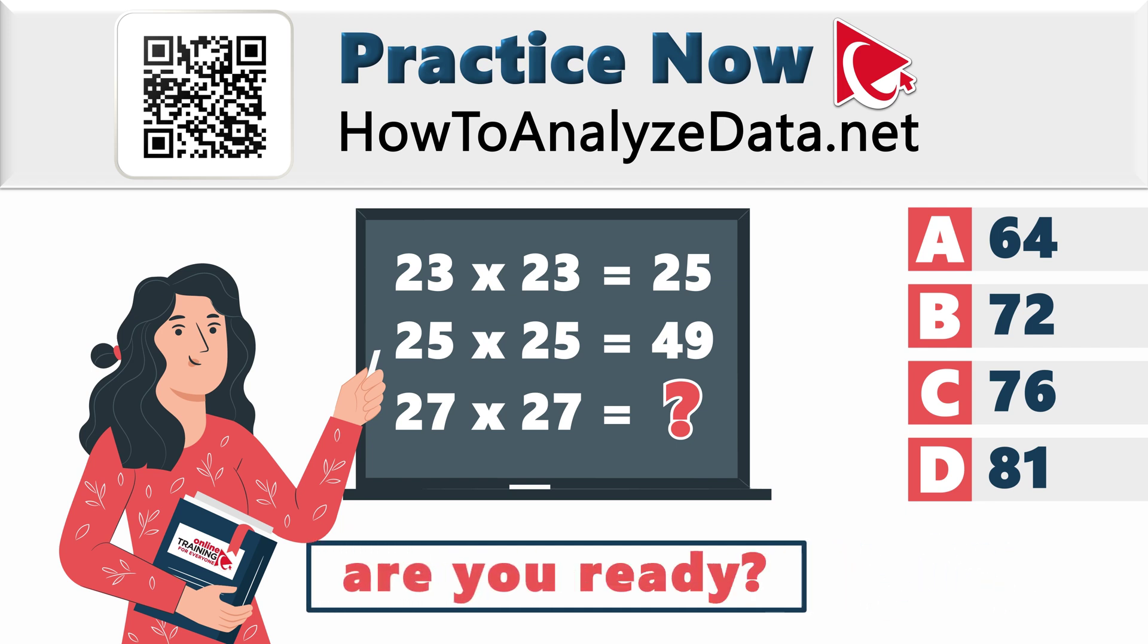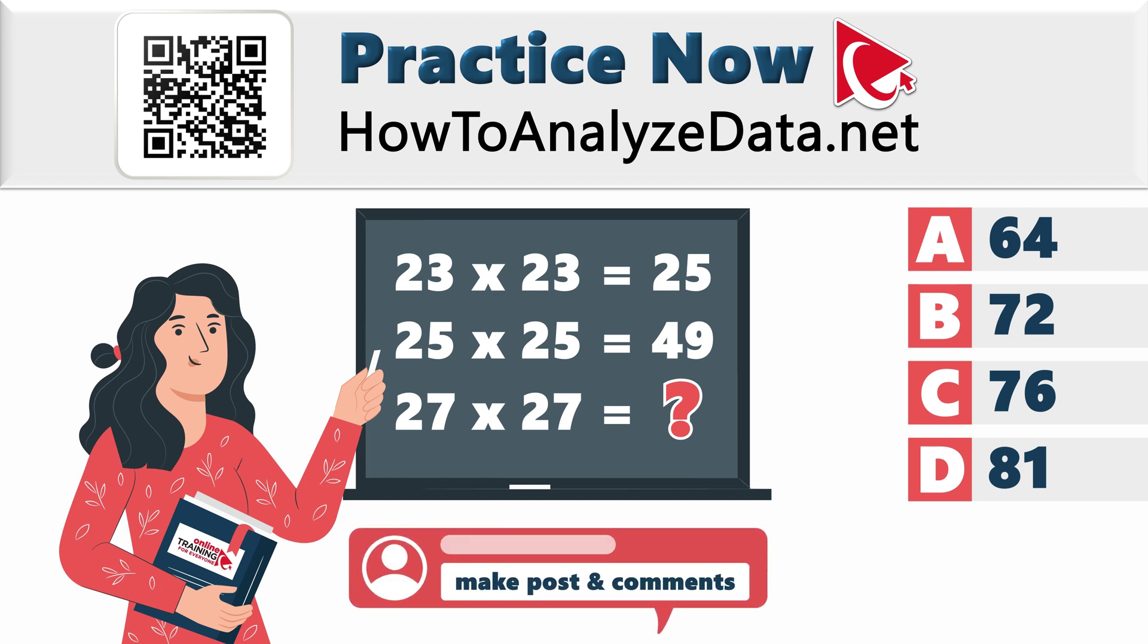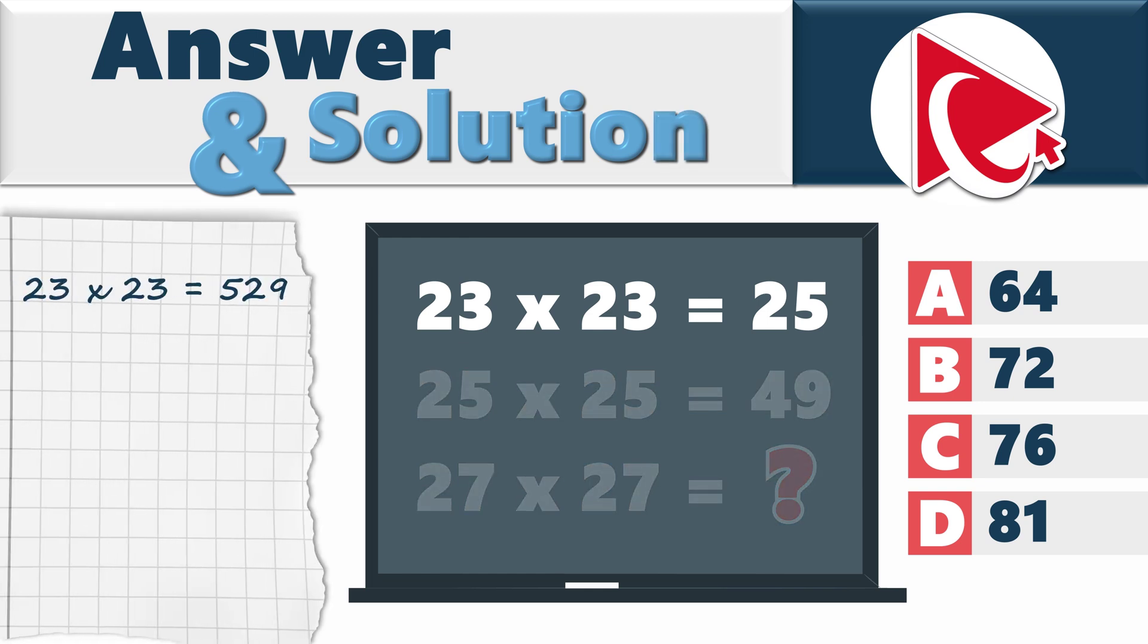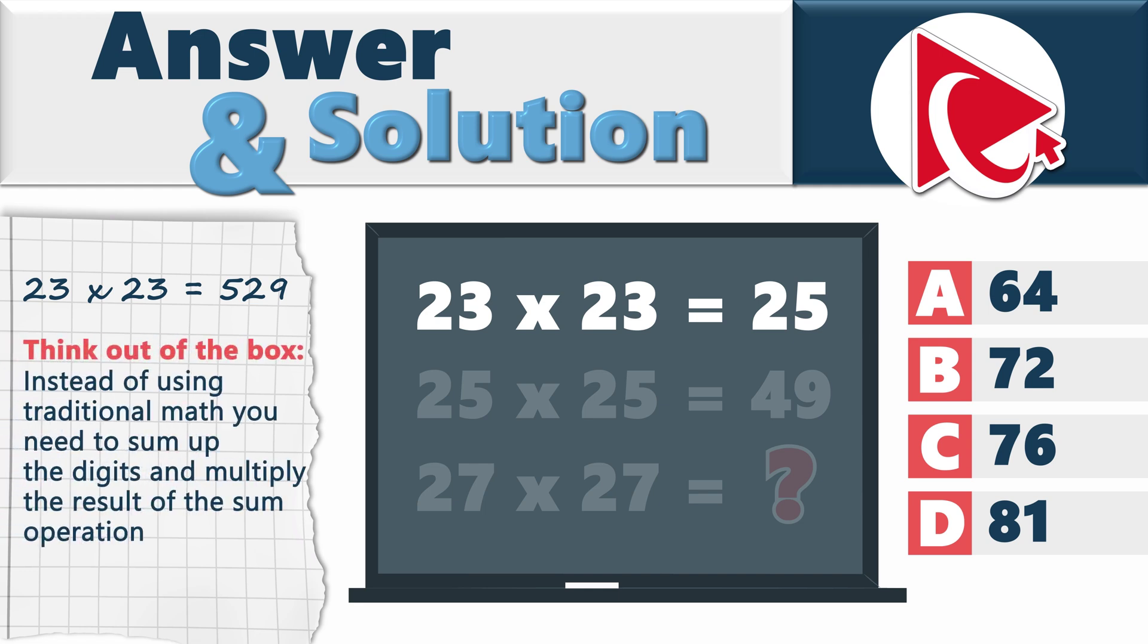Are you ready with your solution? Or at least excited about this mental workout? Let's tackle this puzzle and explore the complexities together. And don't forget to share your brilliance and insight in comments. Your solution might be just the breakthrough we need. Did I warn you that this expression is slippery? In the typical world, 23 multiplied by 23 equals 529. But to solve this problem, we need to think out of the box. Instead of using traditional math, you need to sum up the digits and multiply the result of the sum operation.